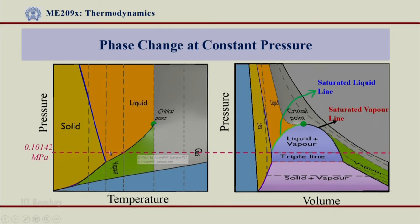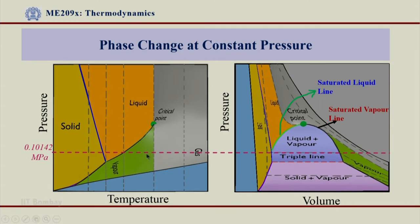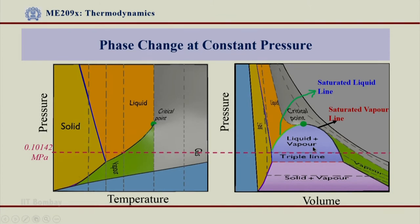I may go from some liquid region at a temperature less than 100 degrees centigrade, then start heating it so the temperature increases, and eventually land in the vapor or gas region depending on whatever temperature I want to achieve. Similarly, if I show the same thing on a PV diagram I get a horizontal line, but when going from liquid to vapor I pass through a two-phase region — through the dome — and inside this dome lies a liquid plus vapor two-phase mixture.